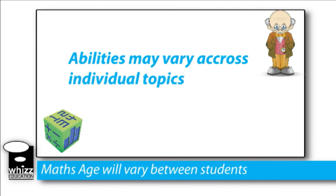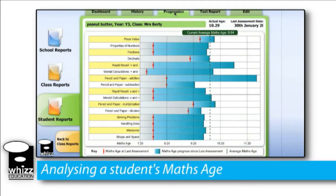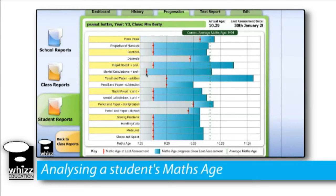Furthermore, their ability may vary across the different topics. We can see that when peanut butter first did his assessment, in place value he had a maths age of 9.5, yet in mental calculation strategies he had a maths age of just 7.5. And quite often we do see students that have a 2 year gap between their best and least favourite topic.